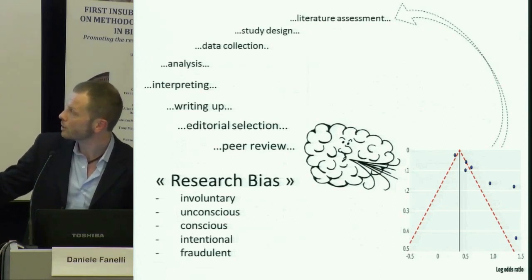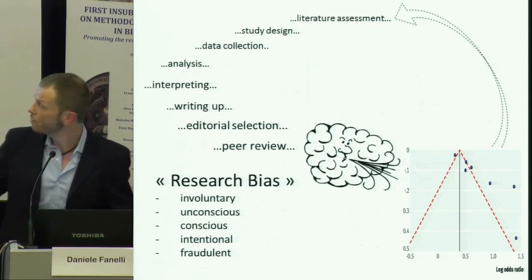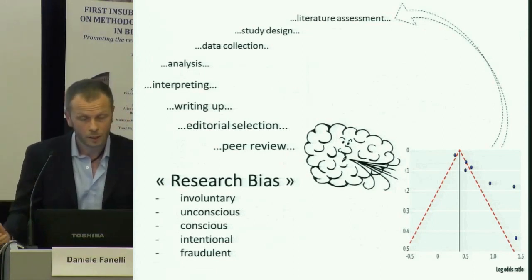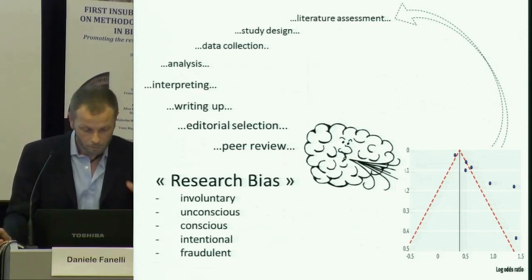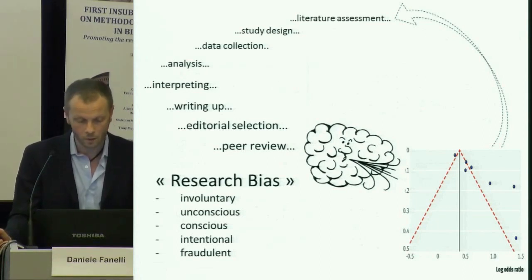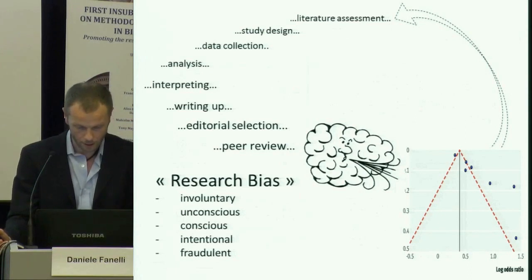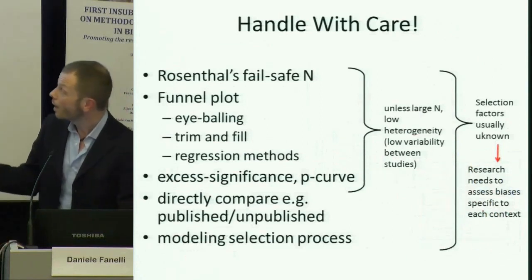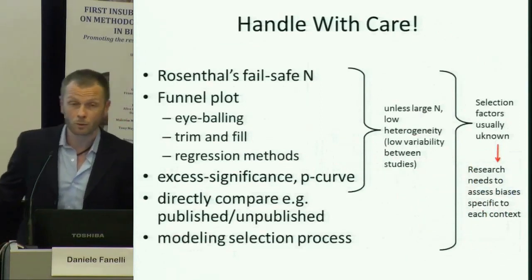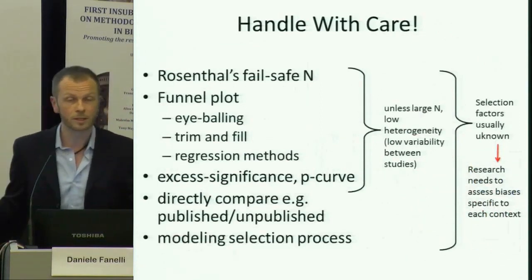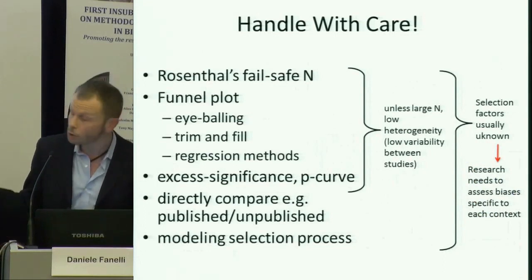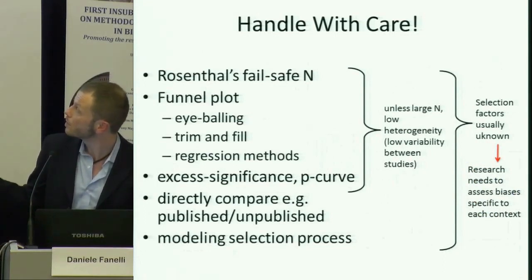This is why I like to talk about research bias. With very different levels of potential malevolence, you can introduce bias at all these levels. This is what you're facing when you're assessing a literature quantitatively. Most of whatever you will read around publication bias or around the existence of distortions in the literature will be based on one of these methods.